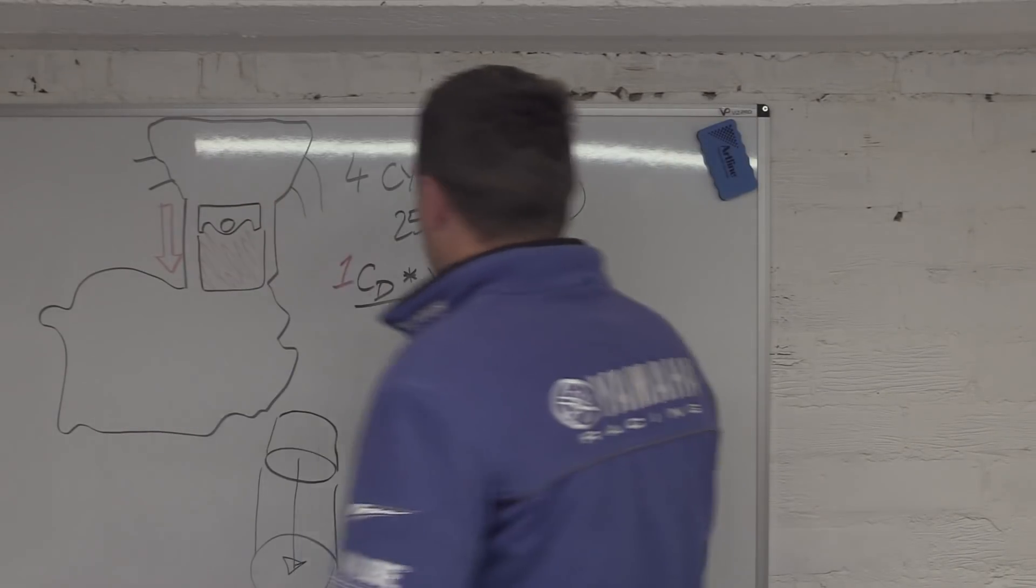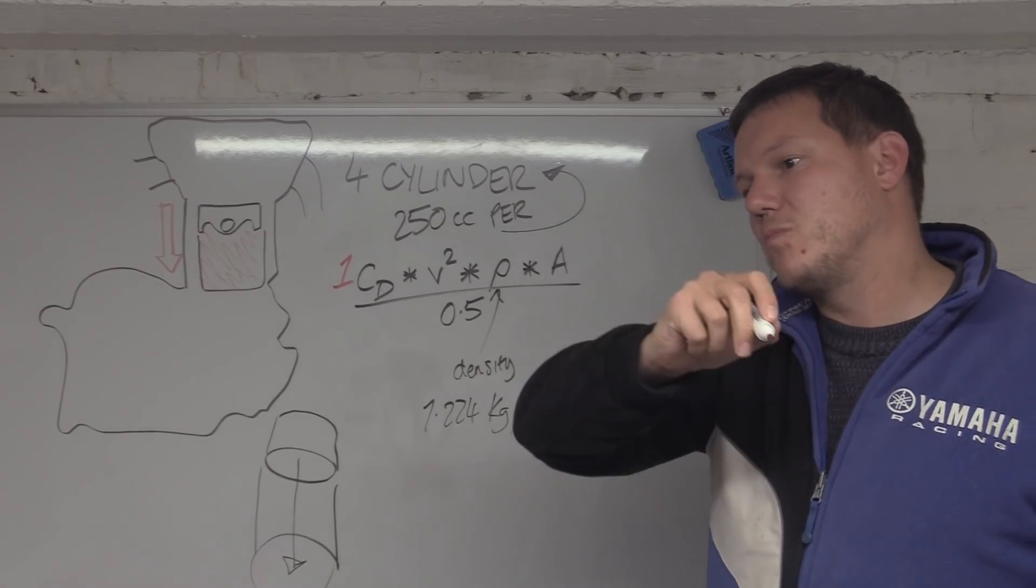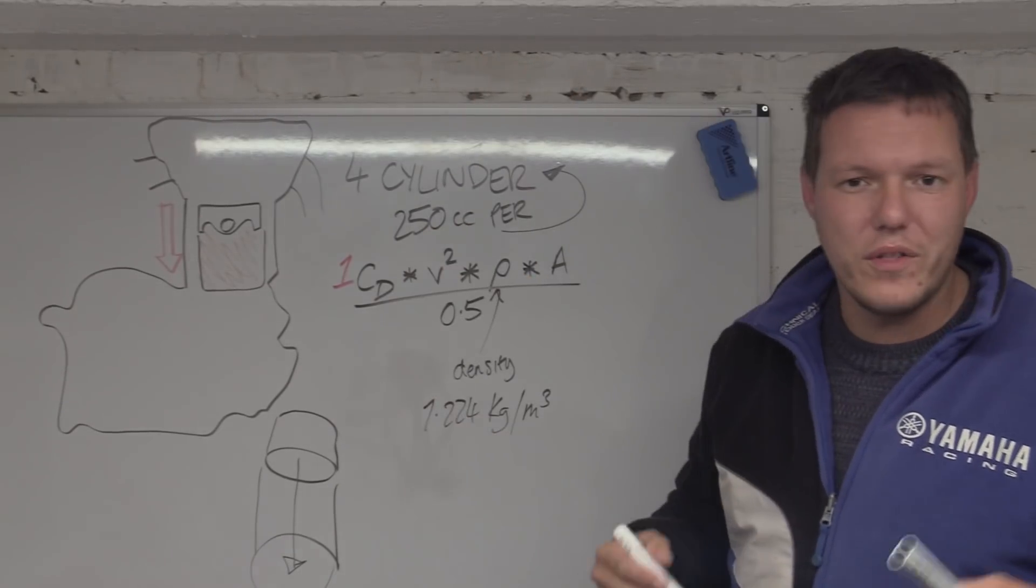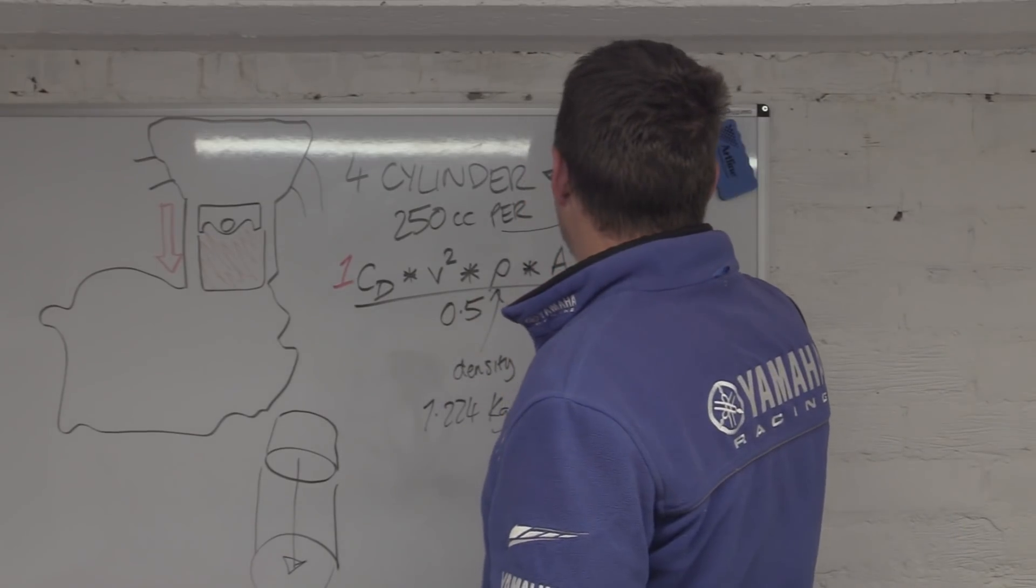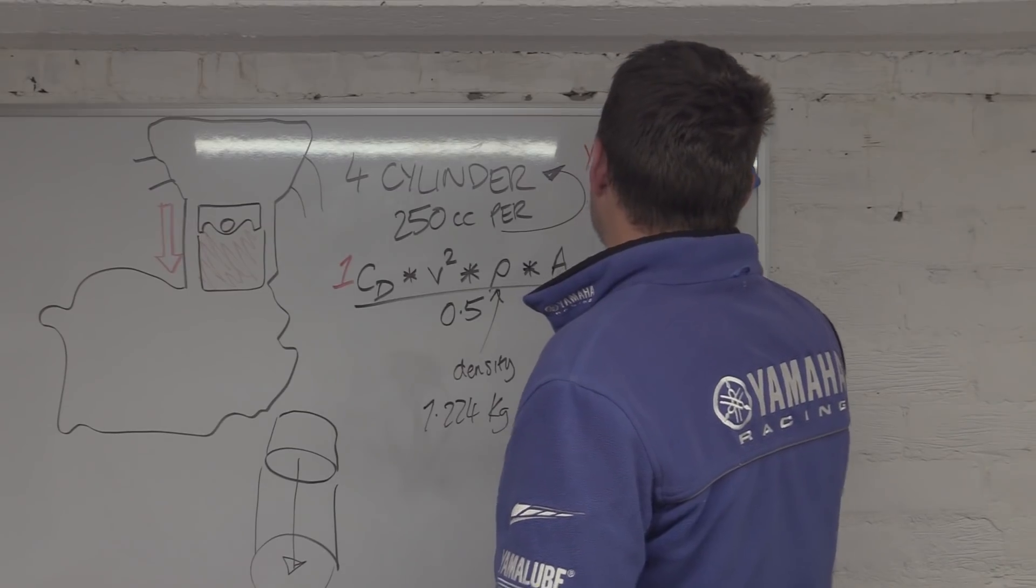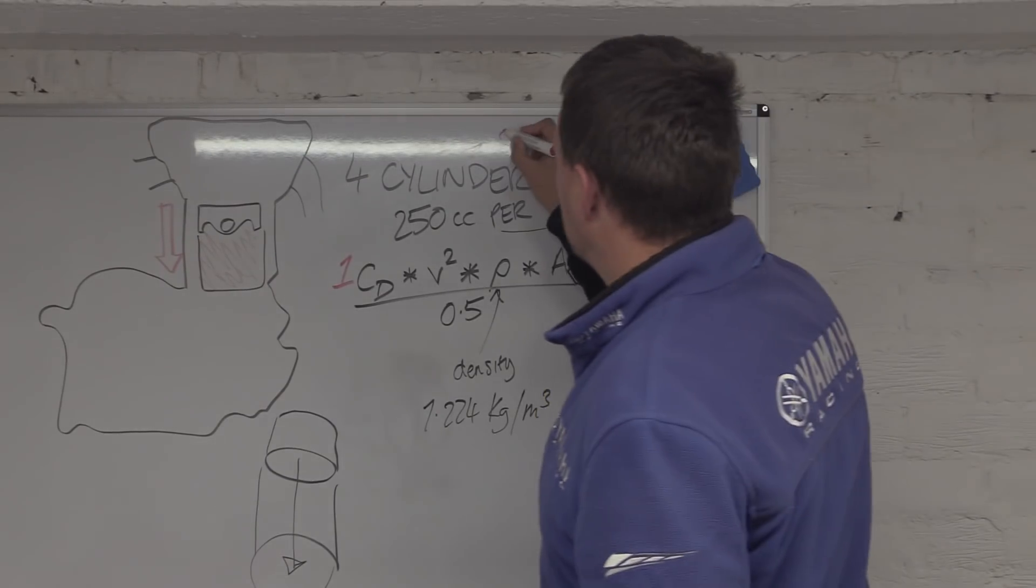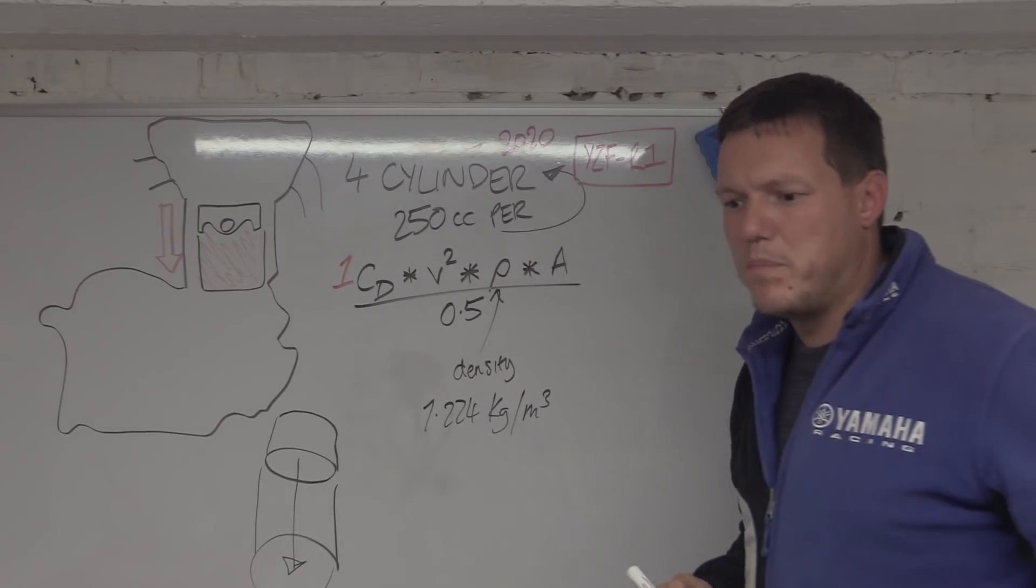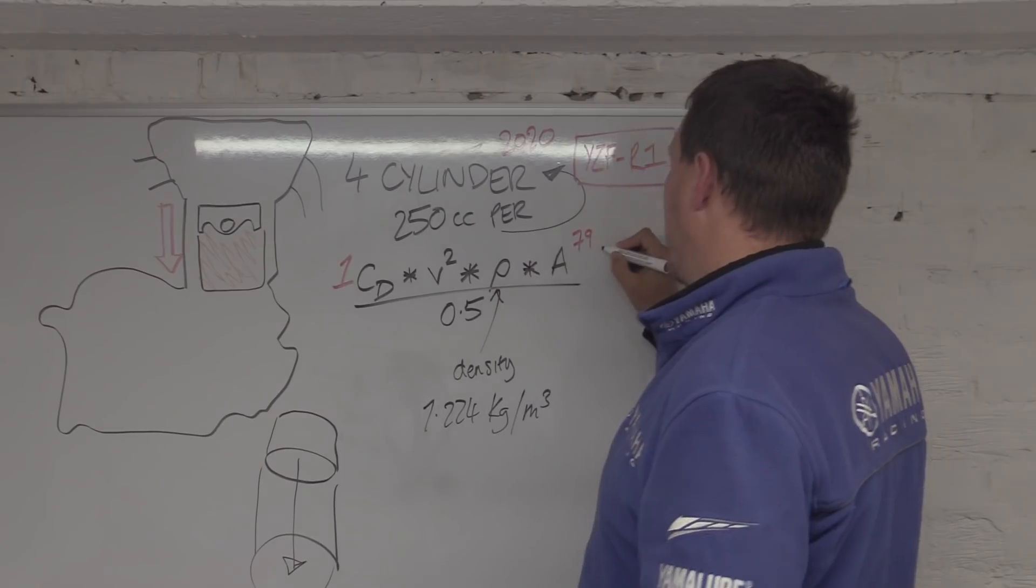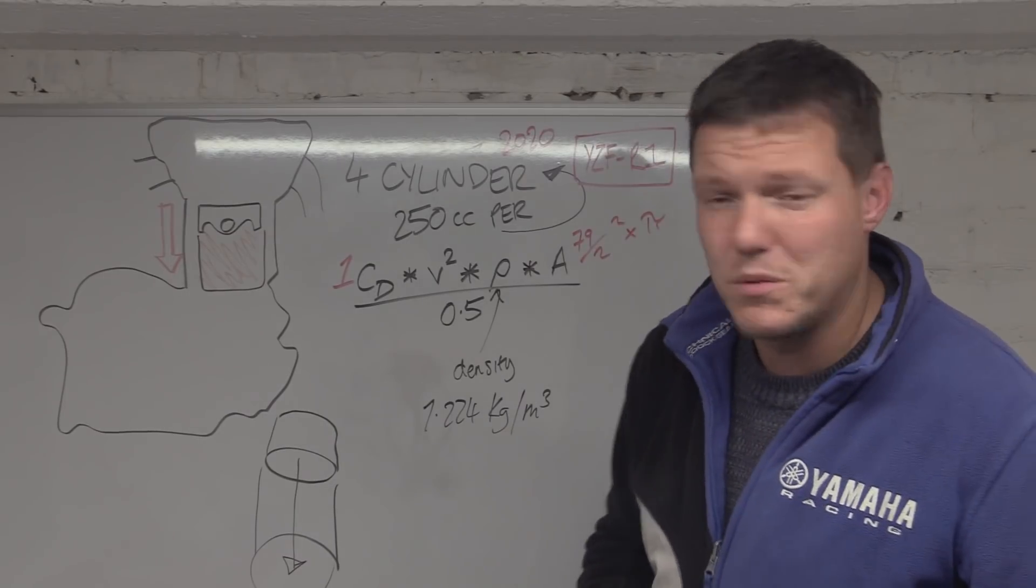We're just going to call it basically a diameter. Our CD, because we're not going around, we're just slamming a cylinder basically a circle straight into it, we'll just call this one. Our velocity is a bit of funny because we're accelerating from zero at the top and then zero at the bottom, so I've done a curve for this. We're going to use an R1 in all of this, so these are YZF R1 figures. I'm using a 2020.